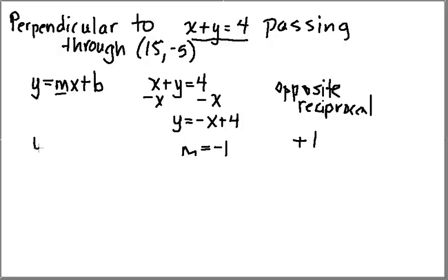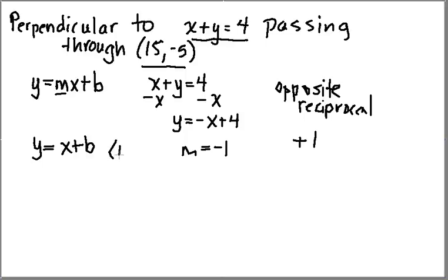So my new line is going to start off as y equals x plus b, because my new slope is 1 — a 1 is out in front of the x, I just don't write it. In order to determine b, I'm going to use the point (15, -5), which gives me an x-value and a y-value to plug in.